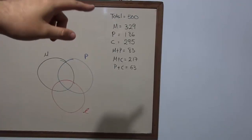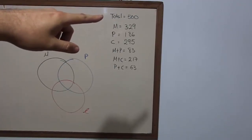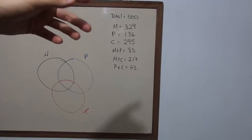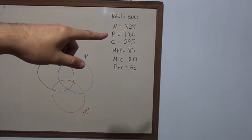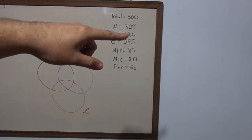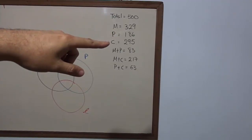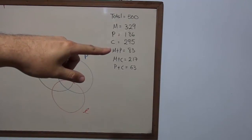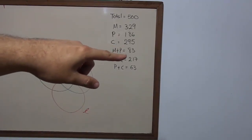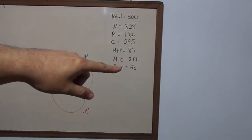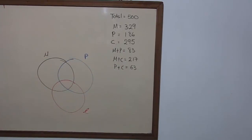Let's illustrate with this example: we have 500 persons in the school. We found that 329 were taking math, 106 were taking physics, and 86 persons — wait, 295 students taking chemistry. Students taking math and physics were 83, math and chemistry were 217, and physics and chemistry had 63 students. So let's fill this up.